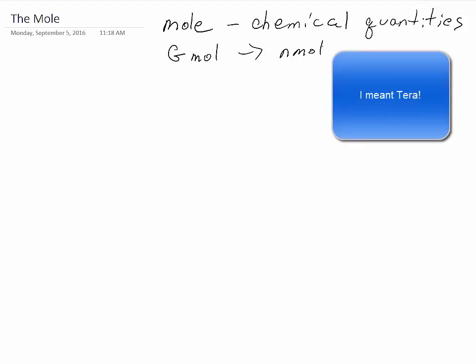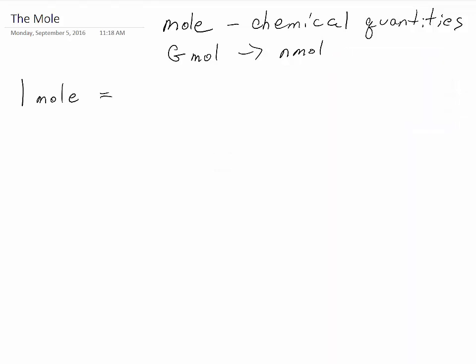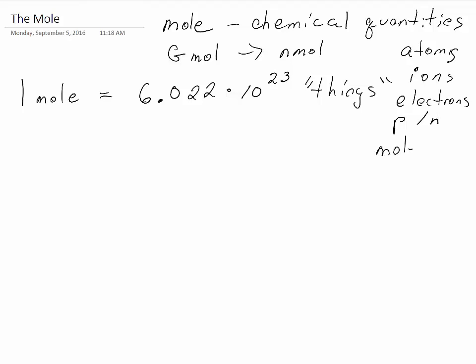One of the central concepts for the mole is a number that you've already seen, which is that one mole equals 6.022 times 10 to the 23rd things, and these things are usually small. So these things could be atoms, ions, electrons, protons, neutrons, etc. We also use this to refer to molecules. So here's the central idea behind the mole.